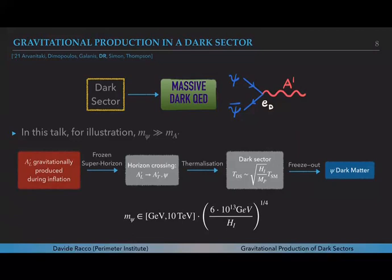The longitudinal degree of freedom produces the transverse modes and the fermions, then there is a reprocessing and there is a thermalization of the dark sector. Eventually the dark sector will get to a temperature that is smaller than the standard model one by the square root of H_I over m_Planck. Eventually there will be a freeze-out and ψ will become the dark matter candidate while the energy density in the vector will be negligible. The favored mass range for ψ then is GeV to 10 TeV and it has a mild dependence on the Hubble rate during inflation.